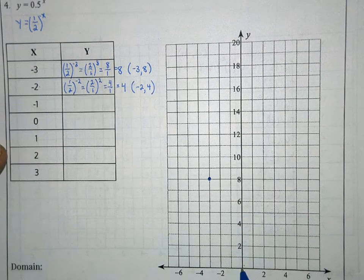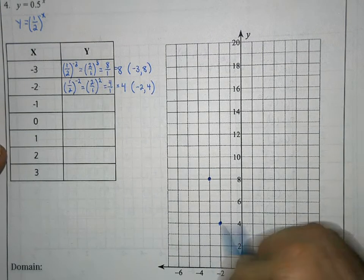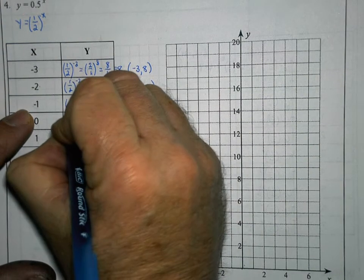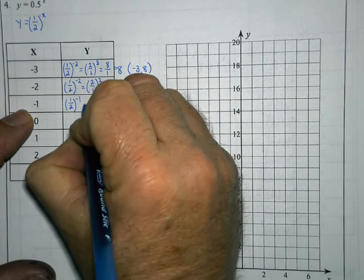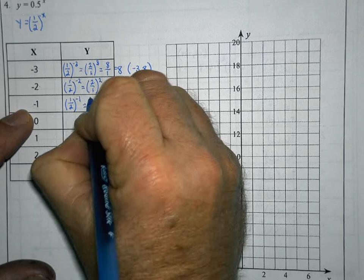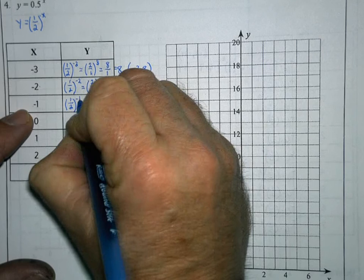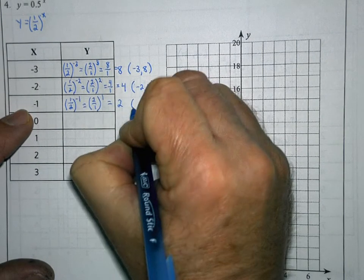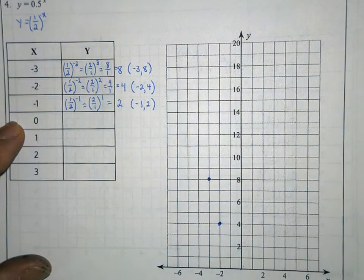On the graph, I go to negative 2 on the x-axis and follow it up to positive 4 on the y-axis and put a point. Now substituting negative 1 for x, my expression becomes one-half to the negative 1 power. Rewriting with positive exponents, I flip the base to get 2 over 1, which to the 1 power is just equal to 2. So when x is negative 1, y is positive 2.